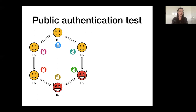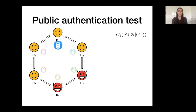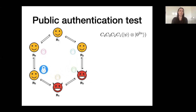We call this the public authentication test, which consists of two phases. The first is the encoding itself, which becomes slightly more involved. Suppose that player one wants to encode his input — he prepares the Clifford code of his input as normal, except that he prepares double the amount of traps: 2n instead of n. He sends the quantum state to the next player, who applies their own random Clifford C2 on top, and it continues until every player has applied a random Clifford and sends it back to player one.